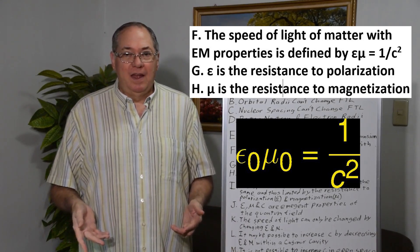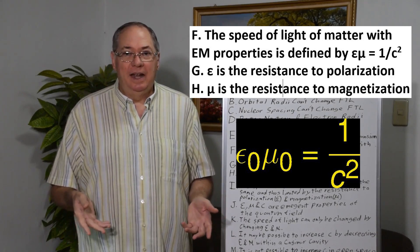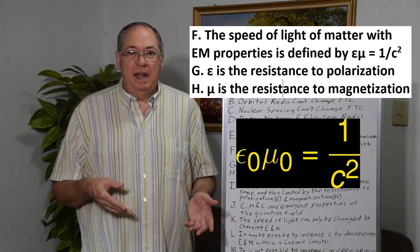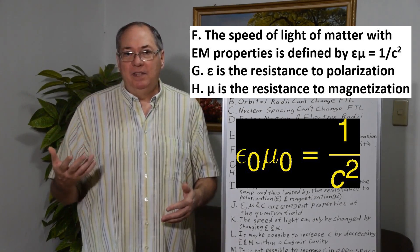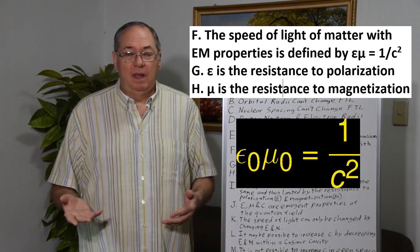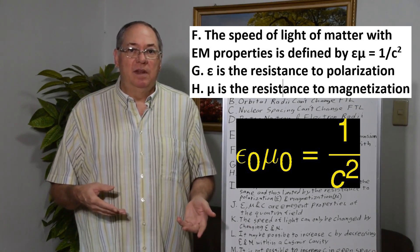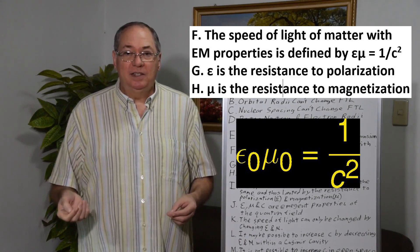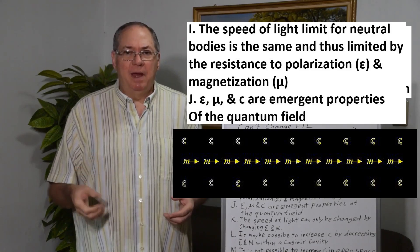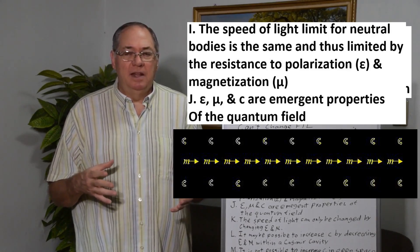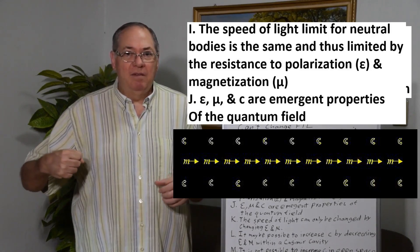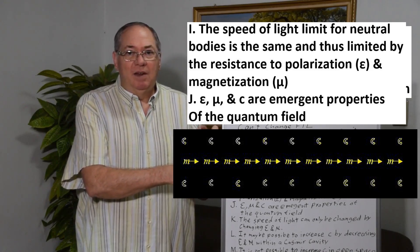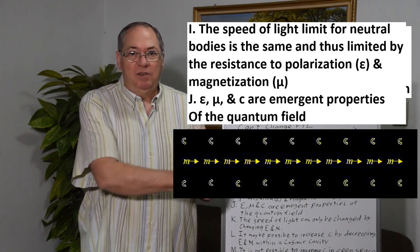And we can think of the permittivity, epsilon, being the resistance to polarization, while we can think of mu, the magnetic constant, being the resistance to magnetization or rotation. And by rotation, I'm talking about self-induction, where if you have a charge move, quantum fluctuations rotate, and resistance to rotation is what restricts the motion of the body. That's what the speed of light limit comes from.